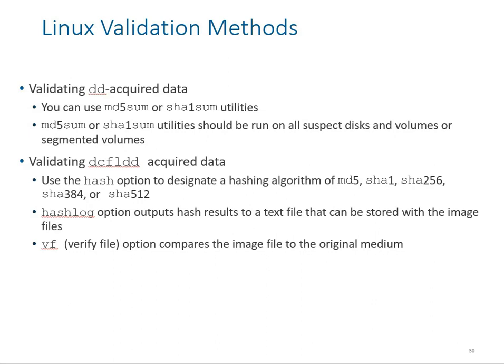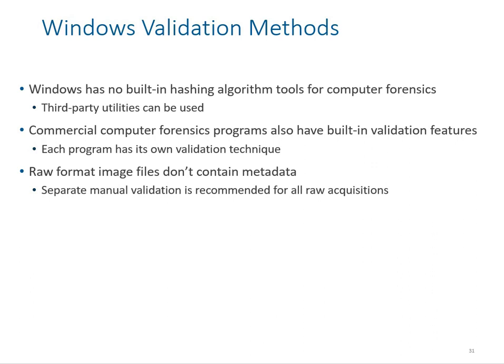In Linux, there are command prompt tools like hashdeep or similar utilities for hash validation — Linux is very smart in that these tools are pre-loaded, so you don't need third-party tools. Windows has no built-in hashing algorithm tool for computer forensics, so third-party utilities must be used. Many are available online for free. You download the executable, enter the source file, it calculates the SHA or CRC checksum and shows you a number to verify the copy matches 100%.